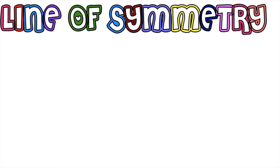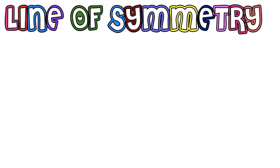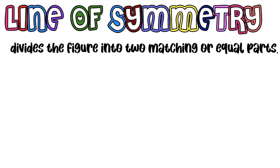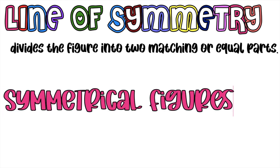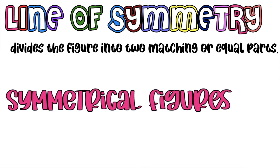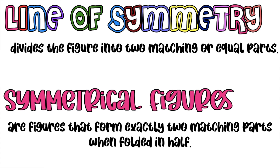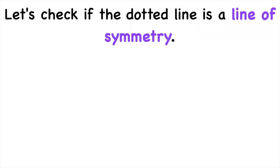So, always remember, children: line of symmetry — symmetry is a line that divides the figure into two matching or equal parts. While symmetrical figures are the figures that form exactly two matching parts when folded in half.